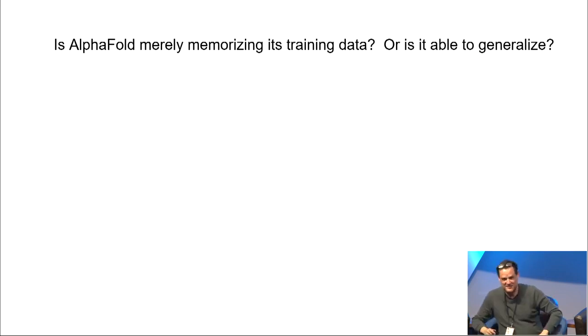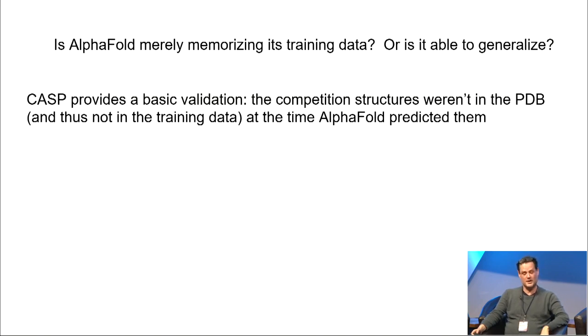The question... Obvious question to ask is, is AlphaFold merely memorizing its training data, or is it able to generalize, or to what extent can it generalize? Obviously, CASP provides a basic validation. The competition structures weren't in the PDB, and thus not in the training data at the time AlphaFold predicted them, so that's good.